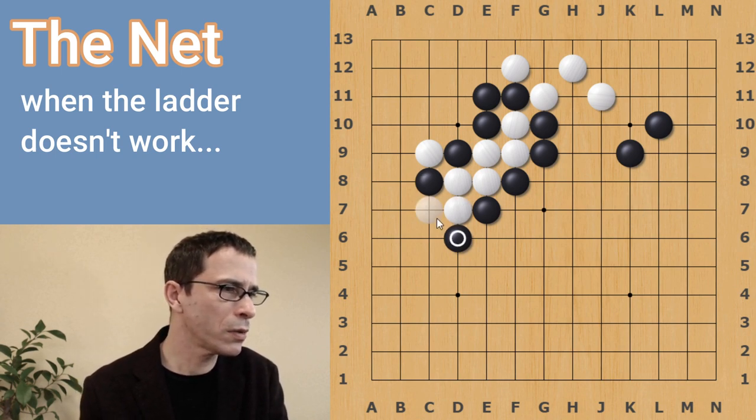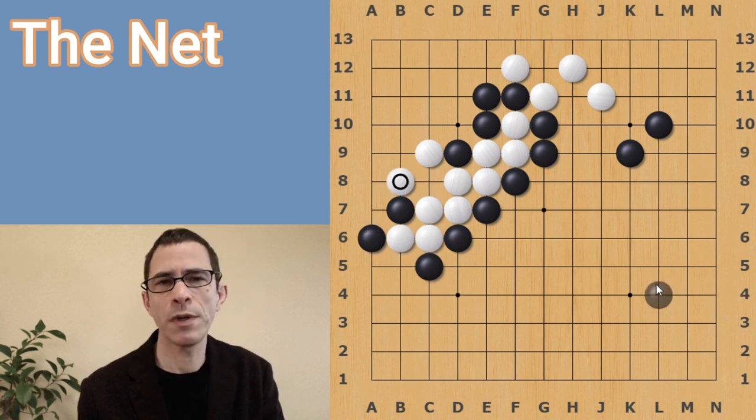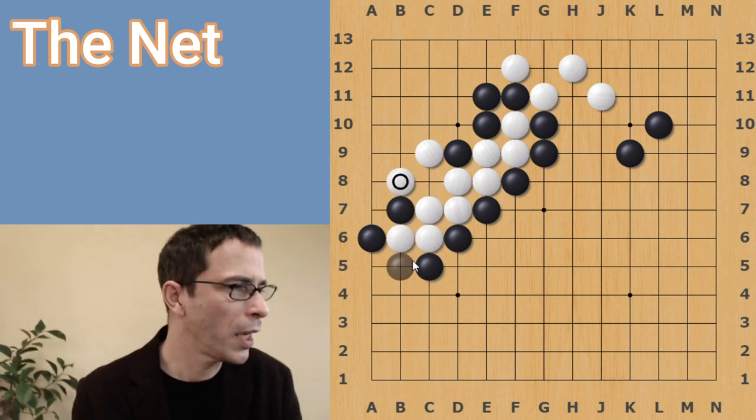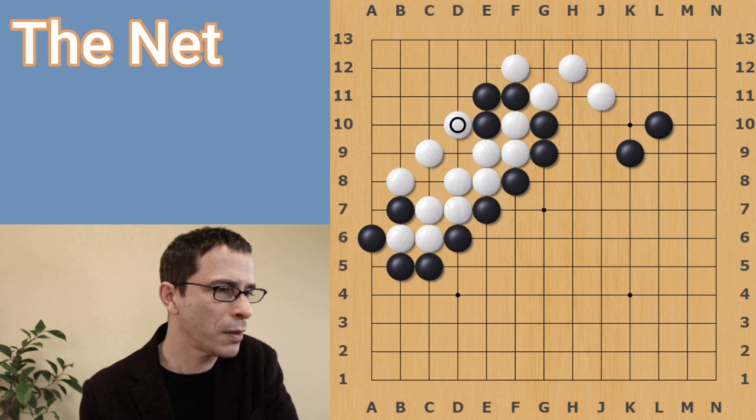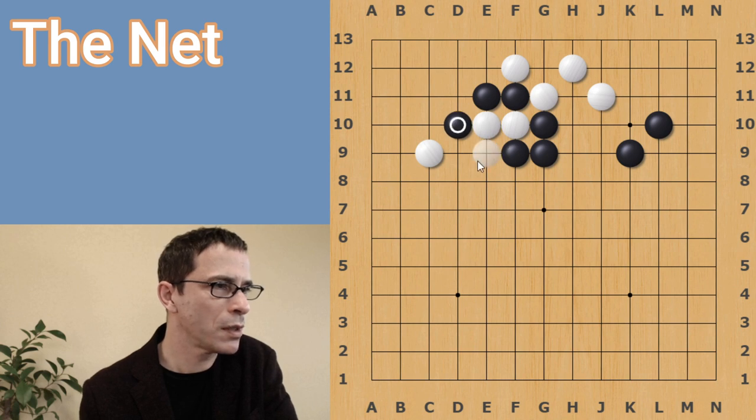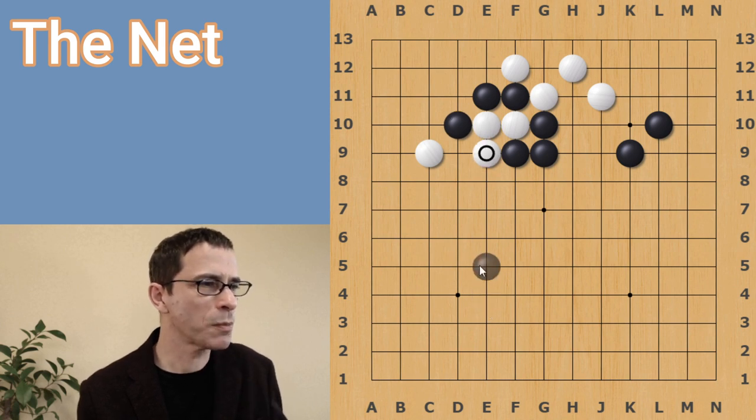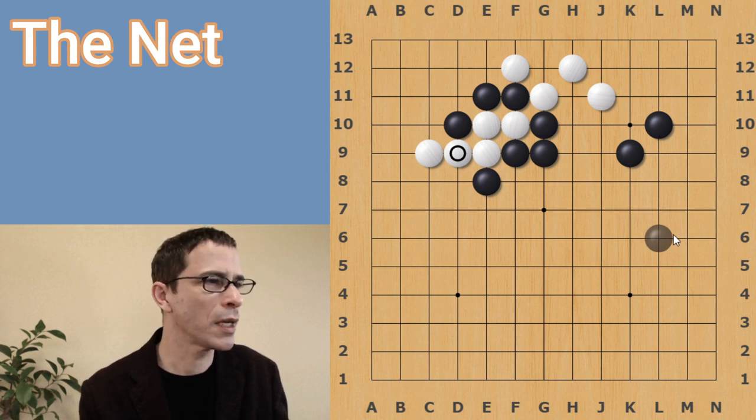The ladder, although it can continue for a bit, at any time white can take one of these black stones, and the ladder is going to stop there. It's going to be a failure for black. If black plays a ladder from the other side, this doesn't work either. With that white stone blocking the way, white will eventually connect to the stone on the left and get a strong position.